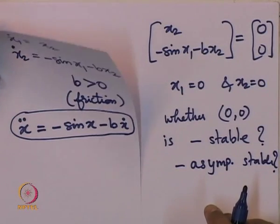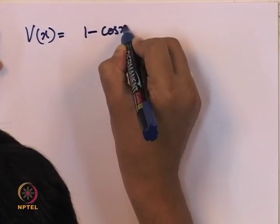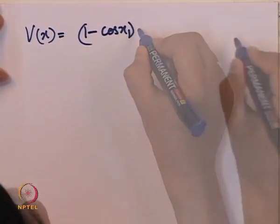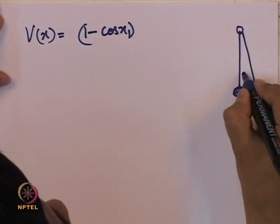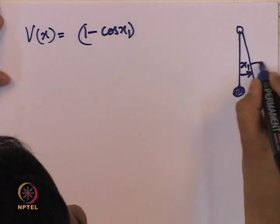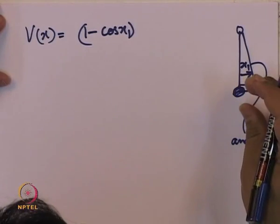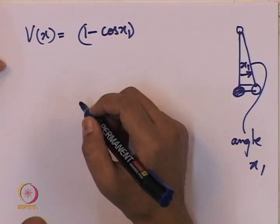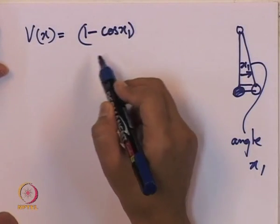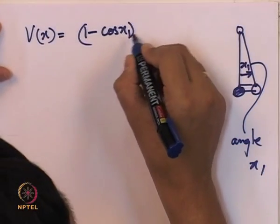For this purpose, we take the Lyapunov function as the energy of the system: V(x) = (1 - cos(x1)) + x2-squared. Here, (1 - cos(x1)) is the potential energy corresponding to the height gained by the pendulum at angle x1, multiplied by mass and gravitational acceleration g (normalized to 1). The second term x2-squared is twice the kinetic energy. Let us check what happens to V-dot of x.